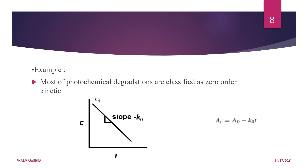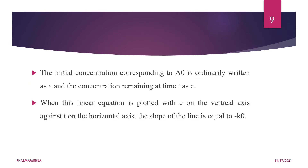When we plot concentration versus time using the equation k₀ = (C₀ − Cₜ) / t, we get a straight line. The slope of the line equals −k₀. This is the linear plot of concentration versus time for a zero-order reaction, where C₀ is the initial concentration and Cₜ is the concentration remaining at time t.